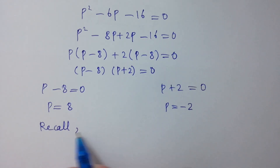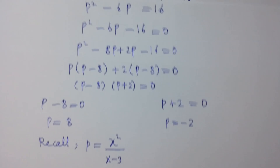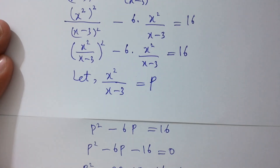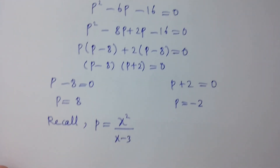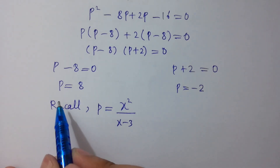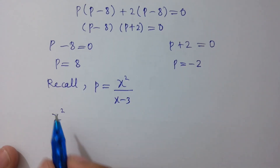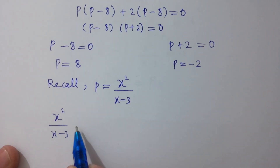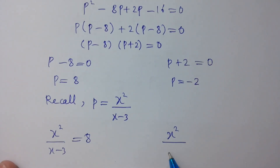Recall p equals x² over (x-3) as we defined. So we have x² over (x-3) equals 8, or on the right-hand side, x² over (x-3) equals minus 2.